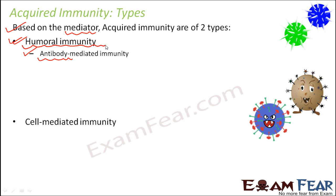What is the meaning of humoral? The word humor is derived from fluid. You would have heard the terms aqueous humor and vitreous humor — the fluid-like regions of your eye. So humor is actually a fluid, and blood is a fluid. These antibodies are produced in the blood, so that is where it got its name as humoral immunity. This immunity is all about antibodies produced by B cells.